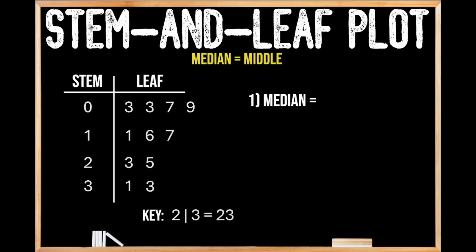So let's go ahead and look at our stem-and-leaf plot here. So our stem is going to be 2, and then our leaf is going to be 3. So that tells us that the stem of 2 and the leaf of 3 is equal to 23.